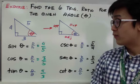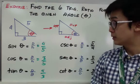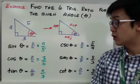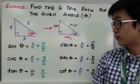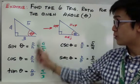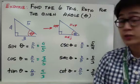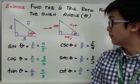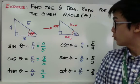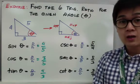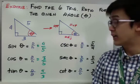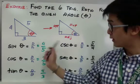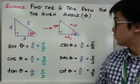For cosine theta, the formula is adjacent over hypotenuse, so we have 3 over 5. And for tangent theta, it's opposite over adjacent, so we have 4 over 3. Those are the three primary trig ratios for our right triangle. For the inverses — cosecant, secant, and cotangent — all you have to do is find the reciprocal of each trig function.